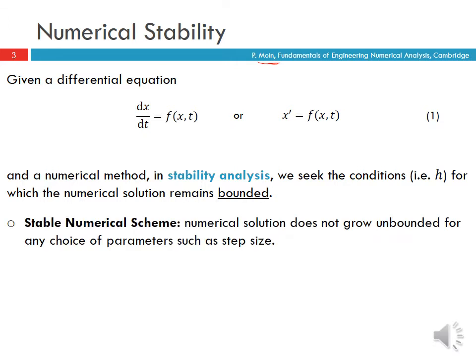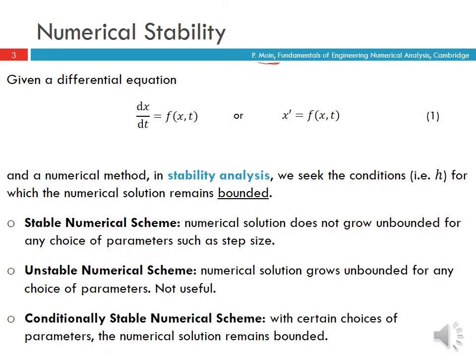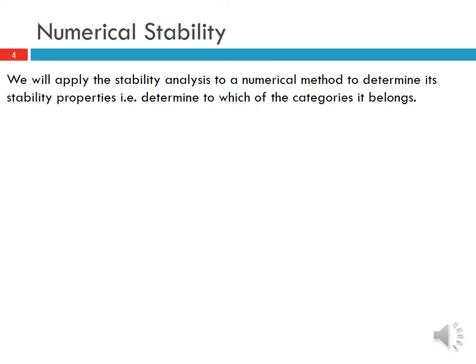There are three primary options for our method. We can have a stable numerical scheme, where the numerical solution does not grow unbounded for any choice of parameters such as the step size. We can have an unstable numerical scheme where the solution grows unbounded for any choice of parameters — this type of scheme is not useful. Or we can have a conditionally stable scheme, where certain choices of parameters allow us to find a bounded solution. We apply stability analysis to determine which category a method belongs to.